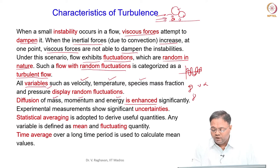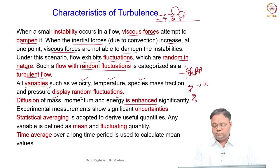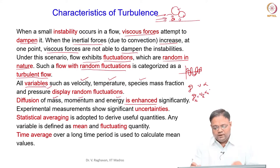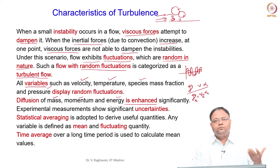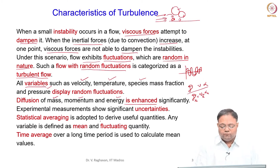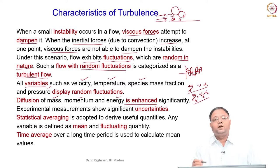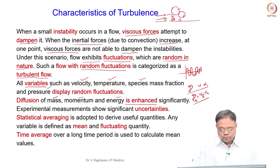In turbulent flow we have turbulent diffusivities: D_t, ν_t, and α_t, and we can see that they will be equal to each other. That means there is no significant difference between D, ν, and α as seen in laminar flow. Once turbulent flow occurs, these diffusivities are enhanced several times and will be of the same order.